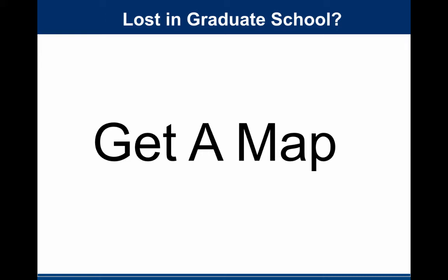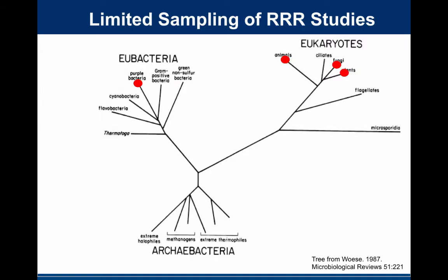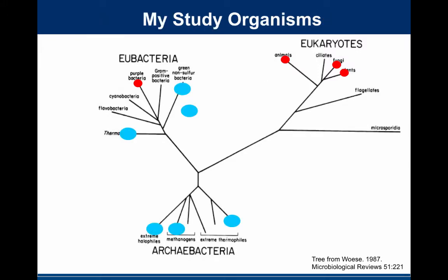I felt like I needed some guidance. I got that guidance from the tree of life — that was my map. This is the classical three-domain ribosomal RNA tree of life from Carl Woese. What I did was basically ask: where are the gaps in studies of DNA repair? Most of the studies had been in a couple of species of bacteria and eukaryotes. I went through the tree of life and said, where are there holes? Where might it be interesting to study DNA repair processes?